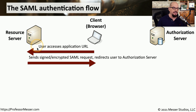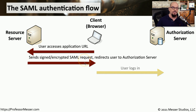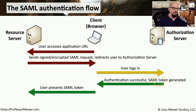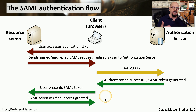This site sees that we have not previously authenticated, so it sends us back a signed and encrypted SAML request and says for you to be able to log in, you need to send this request to the authorization server. We'll then communicate with the authorization server with our login credentials and include this signed and encrypted SAML request. If our username and password is correct, that authorization server will send us back a successful notification and include a SAML token with that response. We can now present that SAML token to the original third party website, and now that the site sees we have a valid token, it can allow us access to that service.